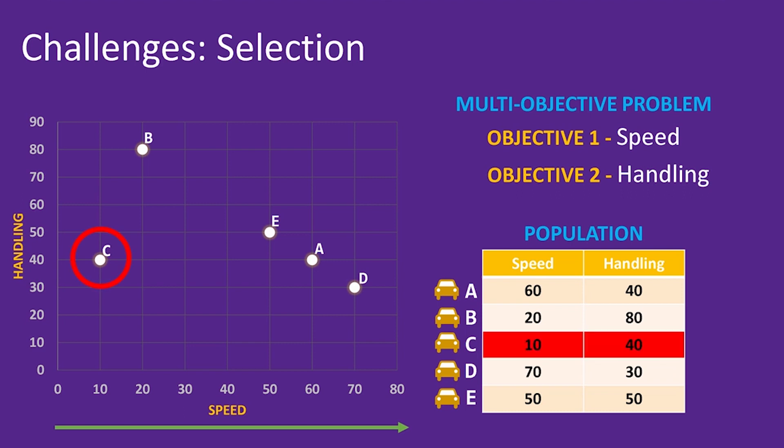After plotting these points, solution C stands out from the rest. It has a very low speed of 10 and a mediocre handling of 40. But what matters is that there are other solutions in the population which are better than solution C in both speed and handling.